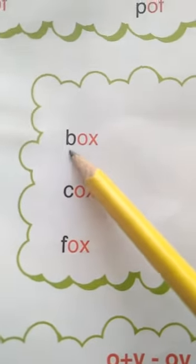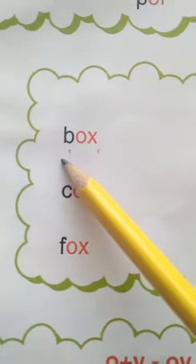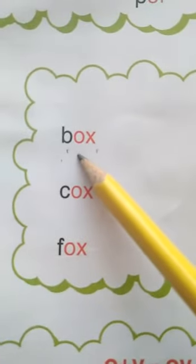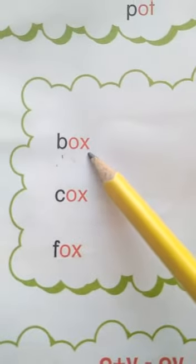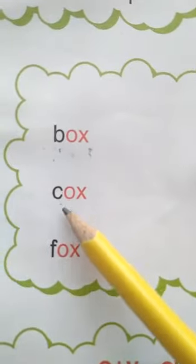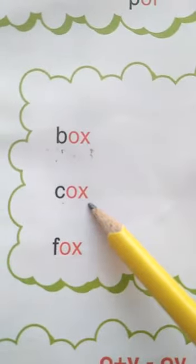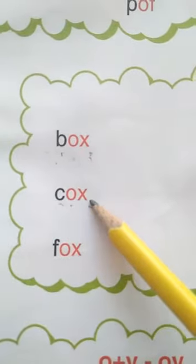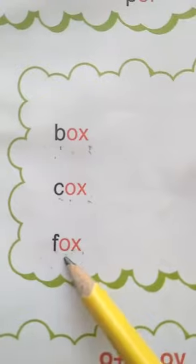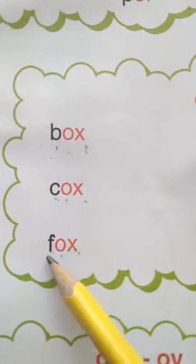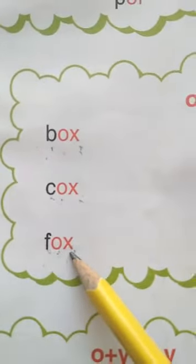B O X — Box. B says B, O says O, X says KS — B O KS — Box. F O X — Fox. F says F, O says O, X is KS — F O KS — Fox.